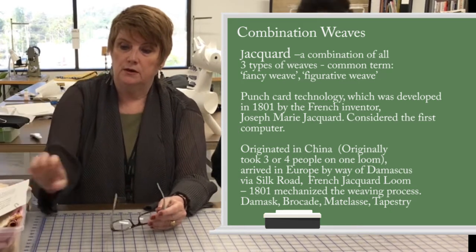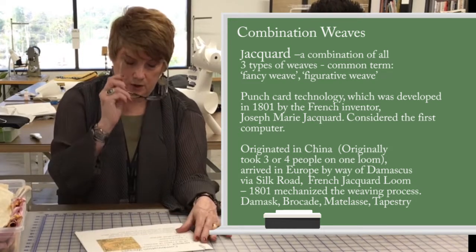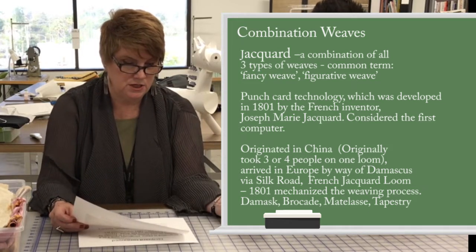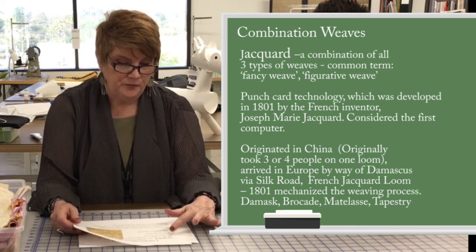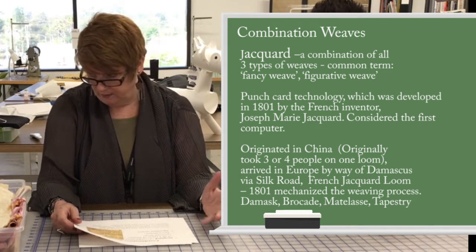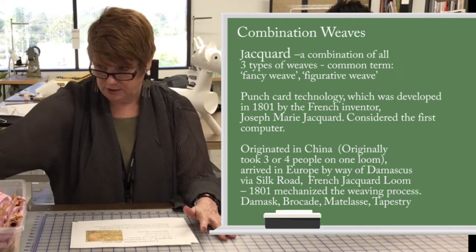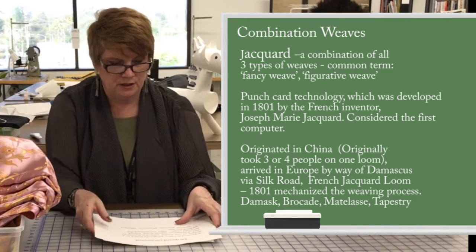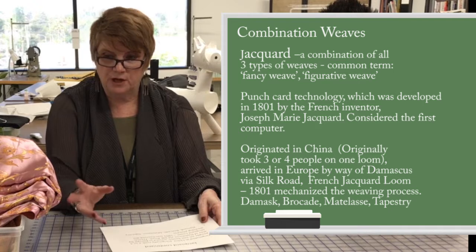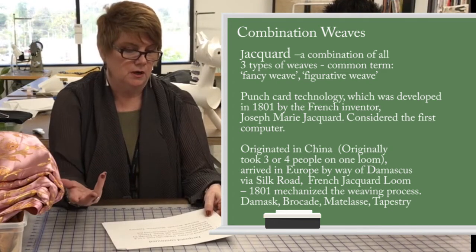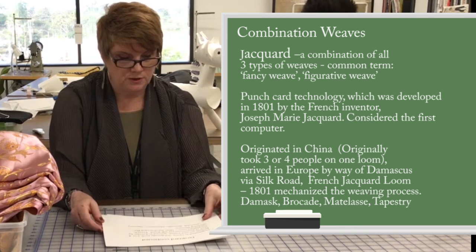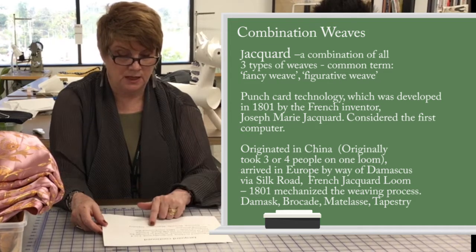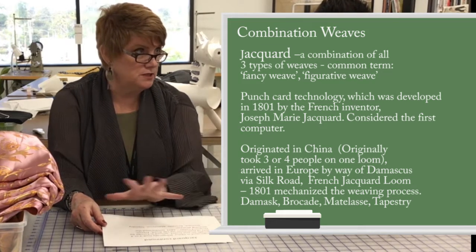What gets more complicated are combination weaves. Combination weaves include jacquards — J-A-C-Q-U-A-R-D — also called fancy weave or figurative weave. Jacquard originated in China, and then Jacquard is the French inventor who turned it into a manufacturing loom in the early 1800s. Materials like damask, brocade, matelassé, and tapestry are all these kinds of jacquard weaves.